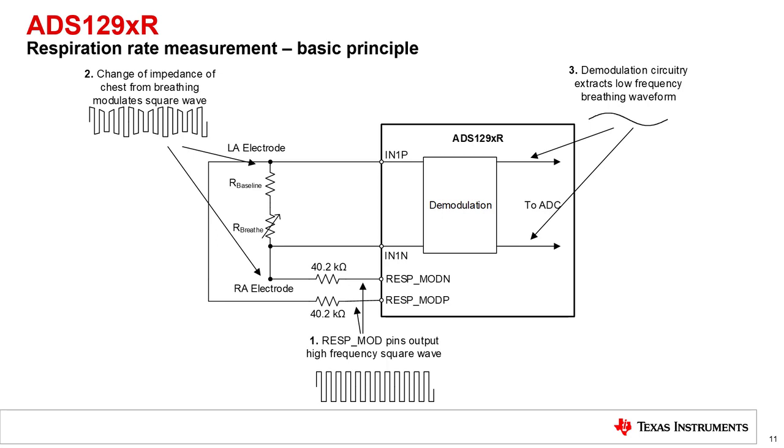The DC common mode voltage in the demodulated waveform results from the total constant impedance in the respiration signal path. The amplitude of the demodulated waveform is the result of the changing impedance, R breathe. This waveform is then output from the ADC for analysis by the customer.